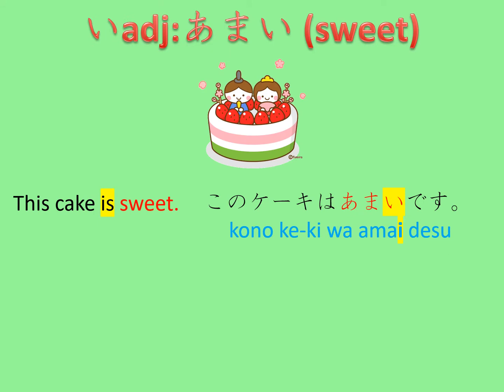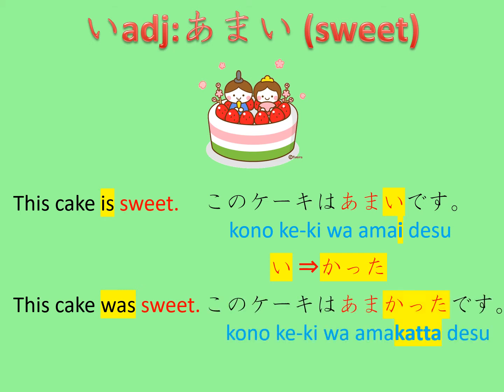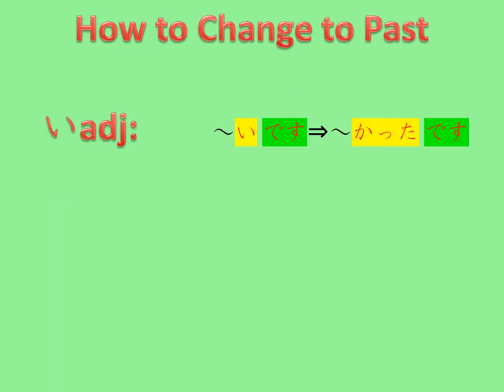This time, let's change 'this cake is sweet' — 'kono keeki wa amai desu' — into a past statement: 'this cake was sweet.' In order to do that, the last -i of the adjective has to be changed to -katta. So the whole sentence becomes 'kono keeki wa amakatta desu.' With i-adjectives, you change the ending -i into -katta, but leave desu as it is.